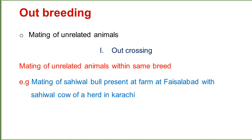Outcrossing is the mating of unrelated animals within the same breed. For example, the mating of a Sahiwal bull present at a farm in Faisalabad with a Sahiwal cow of a herd in Karachi. In this example, both animals are from the Sahiwal breed — the bull and the cow are both Sahiwal.